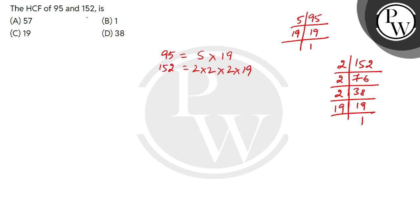So the common factor occurring in both is 19. Therefore, HCF of 95 and 152 is 19, which is option C. Thank you.